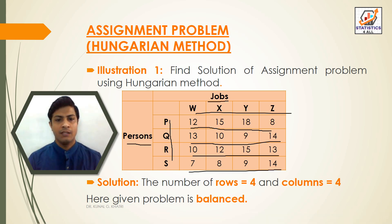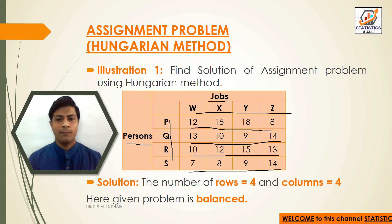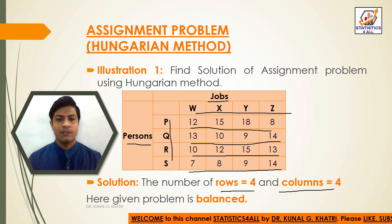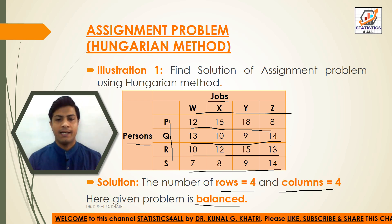In the given solution, we can see that the number of rows equals 4 and the number of columns equals 4, so the given problem is balanced.